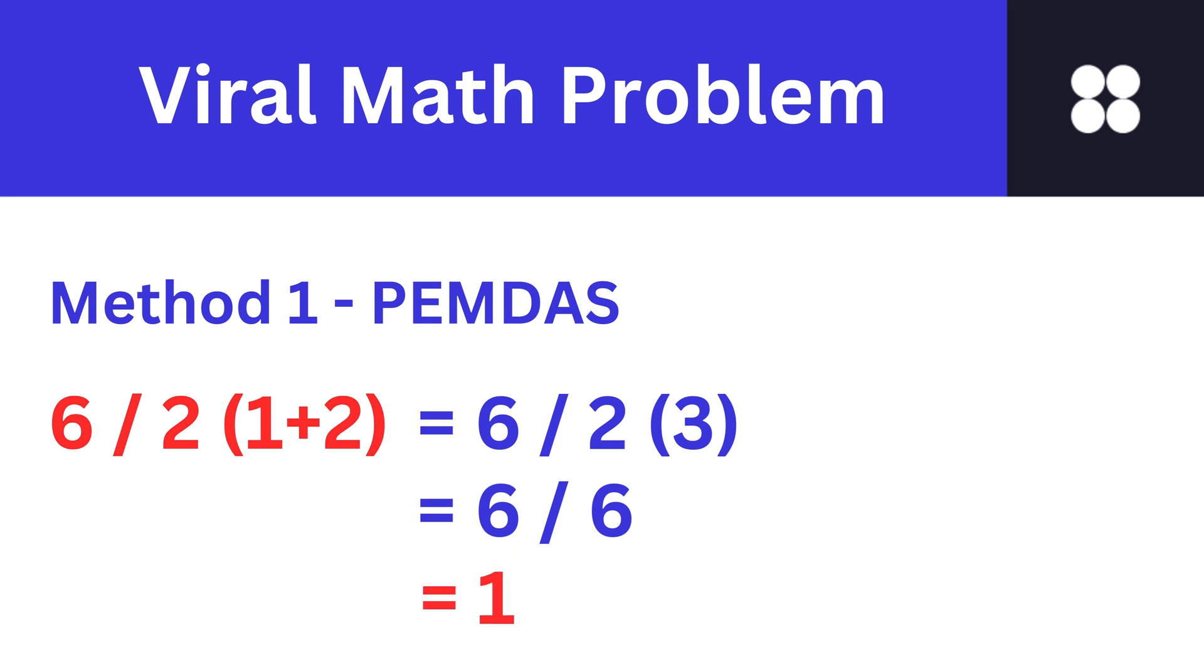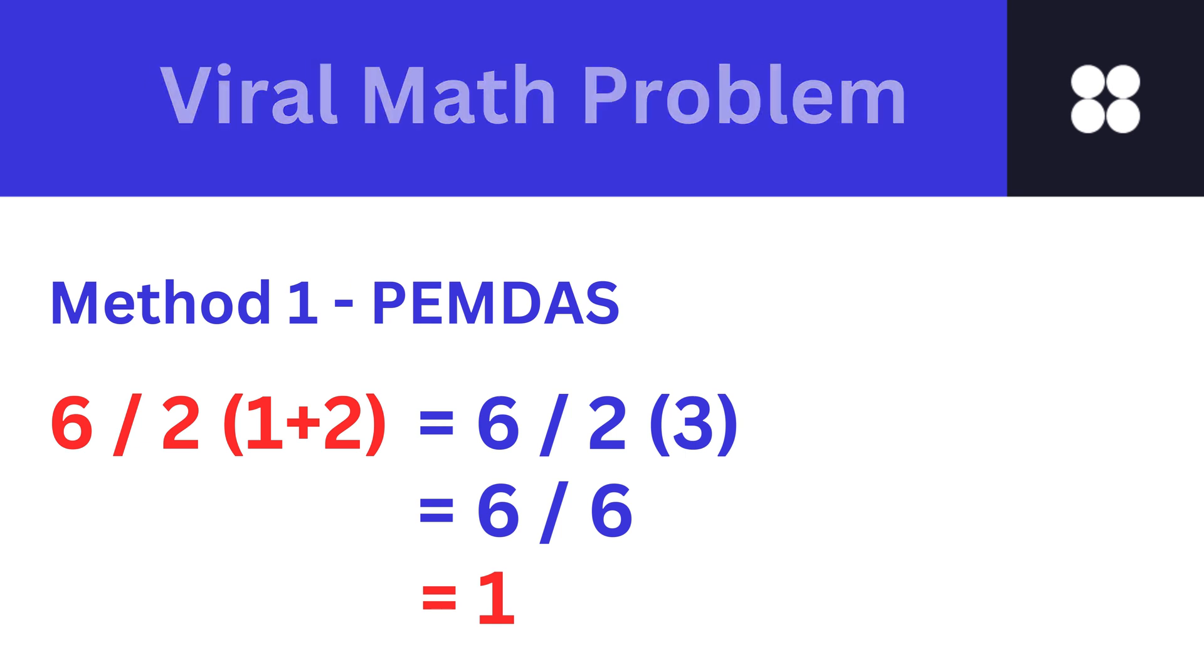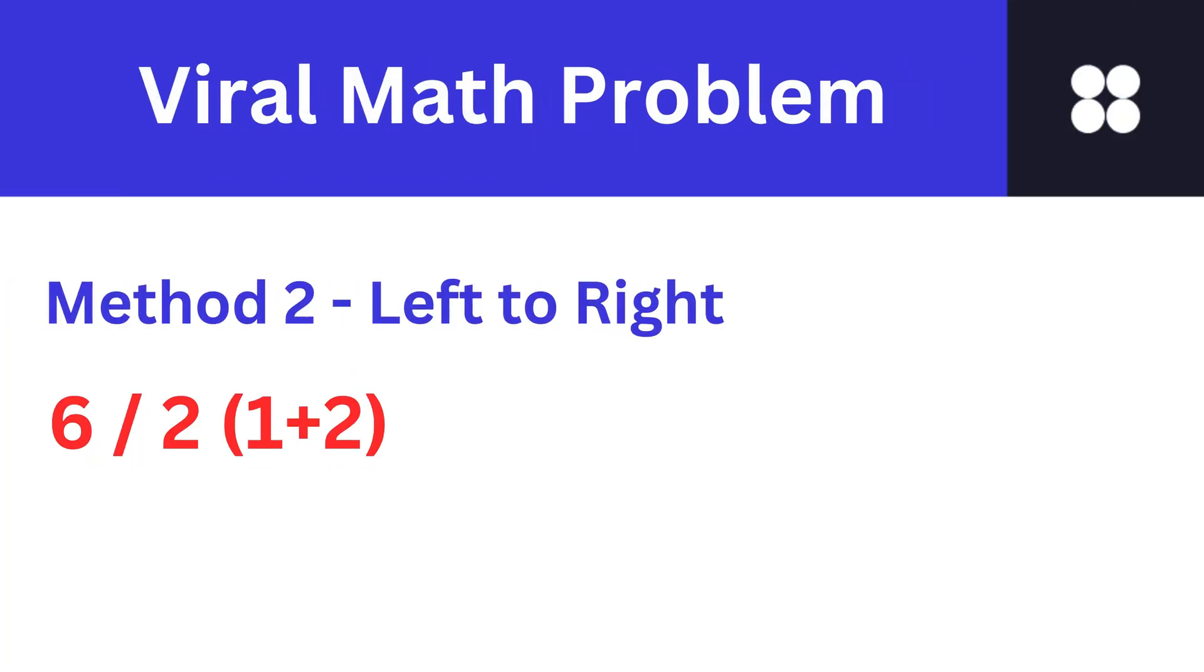It seems straightforward. There is another side to this mathematical coin. The left to right approach involves tackling the problem step by step. First, we deal with the parentheses: 1 plus 2 equals 3.